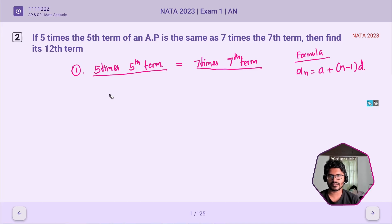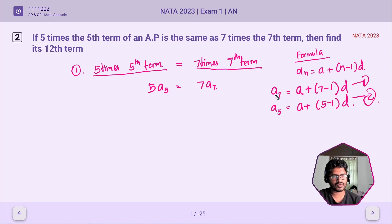The term which is given here, 5 times the 5th term, can be written as 5A5 = 7A7. Now substitute the value of A7 and A5 in this equation. After simplification we will get this.